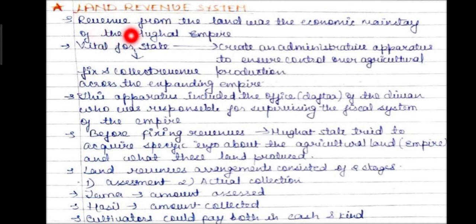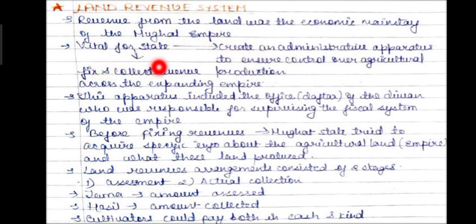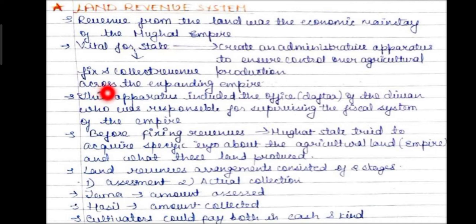Our next topic is the land revenue system. Revenue from the land was the economic mainstay of the Mughal Empire — it was their main source and was vital for the state. The state created an administrative apparatus to ensure control over agricultural production, collecting fixed revenue across the expanding empire.